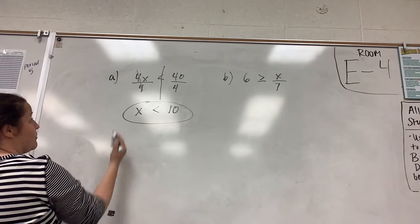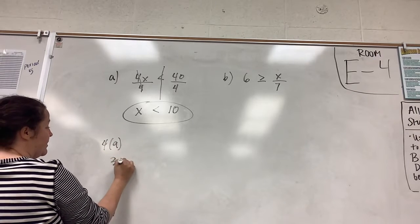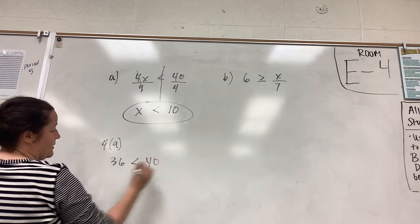You can check it by plugging in a number. For example 9. 4 times 9 would be 36 and that is less than 40. So that works.